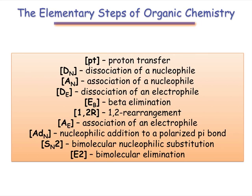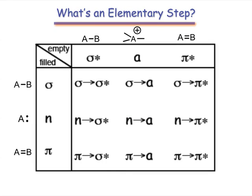We can bring even more order to this list by classifying each step according to the frontier orbitals involved. Classifying the elementary steps in this way does two things. It reveals hidden similarities between apparently different steps,